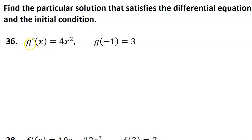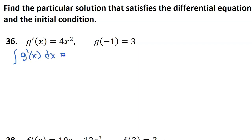So of course, we will use the integral to sort of undo the derivative. If we take the integral of g prime, that's going to turn this back into function g. So we're taking the integral of both sides of the equation, so we also have the integral of 4x squared dx.